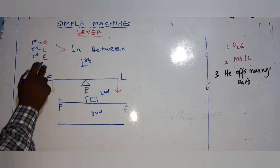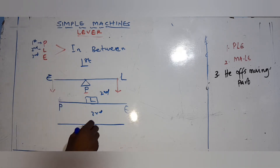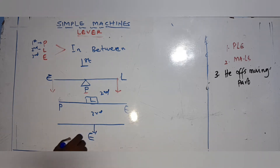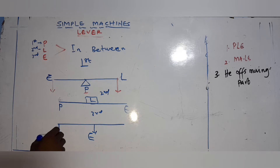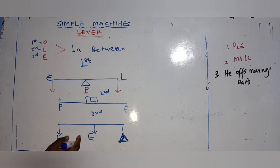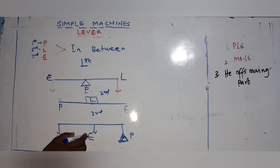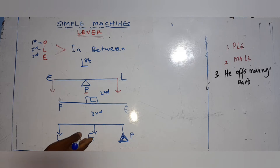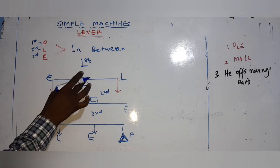For the third class lever, the effort (E) should be in the middle. If the effort is in the middle, with the load on one side and the pivot on the other, it is a third class lever. So: first class — pivot in the middle; second class — load in the middle; third class — effort in the middle.